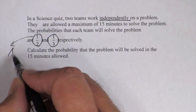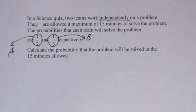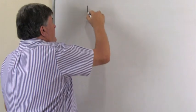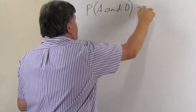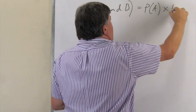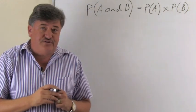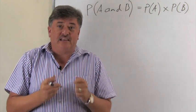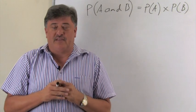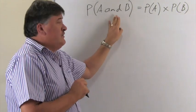Let's say team A has probability a half and team B has probability a third. Now, the very first important thing given in this question is that the two teams work independently. Independent events is something we discussed in previous sessions. The rule for two independent events is: the probability of A and B equals the probability of A times the probability of B. That is only true if two events are independent, and our two teams work independently, so we may use this rule.